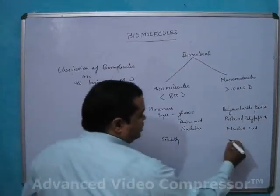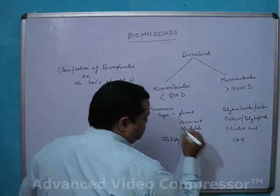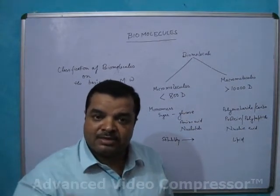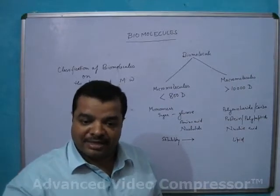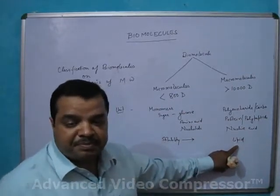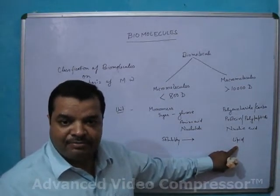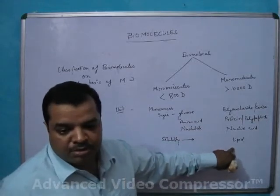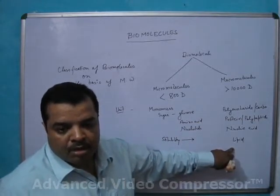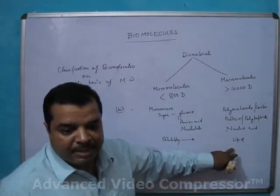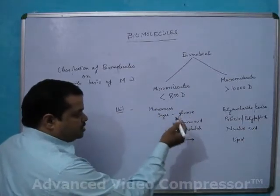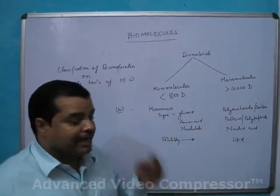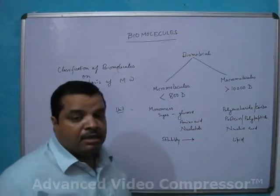On the basis of solubility, lipid is placed in the macromolecules — rather than being a polymer, and rather than having a molecular weight less than 800, because it is present in the retinate when tissue dissolves in TCA. That is why lipid is placed in macromolecules. Examples of micromolecules: glucose, amino acid, nucleotide. Examples of macromolecules: polysaccharide, carbohydrate, protein, polypeptide, nucleic acid, lipid.